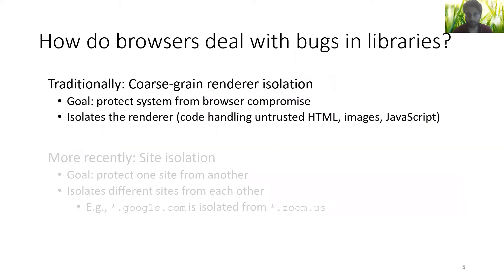In response to this, browser vendors are mitigating the damage from such bugs with coarse-grained renderer isolation. By placing the renderer — the code that handles untrusted content like images — in a separate low-privileged process, they ensure that bugs in media libraries can't compromise the rest of the browser or system.